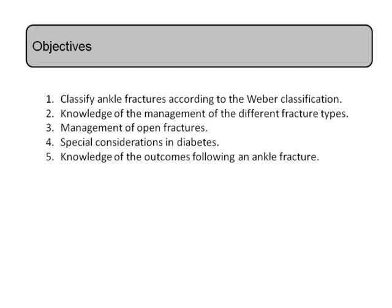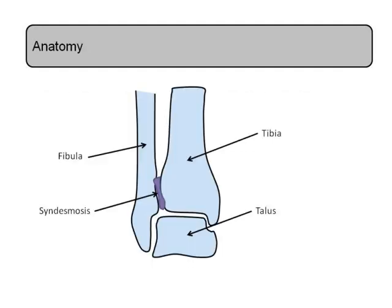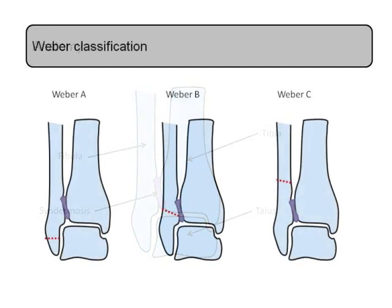The classic classification for this is the Weber classification, which breaks the fracture down into three groups: A, B, or C. A is the least significant and C is the worst. And whereabouts in terms of the bony anatomy are we looking at in terms of classifying A, B, or C?